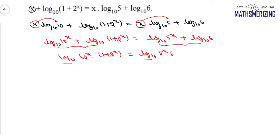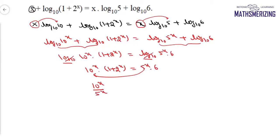Now the base is the same so I can cancel log with log. So I can write 10 to the power x times (1 + 2 to the power x) equals 5 to the power x times 6. Taking 5 to the power x to the left hand side gives (10/5) to the power x times (1 + 2 to the power x) equals 6. That is 2 to the power x times (1 + 2 to the power x) equals 6.